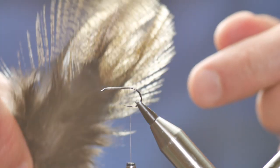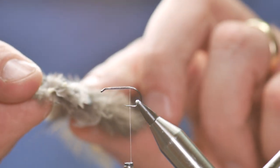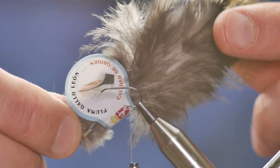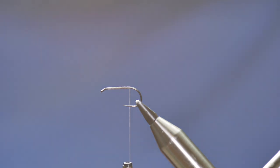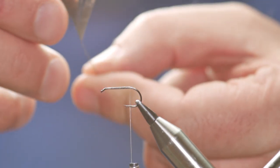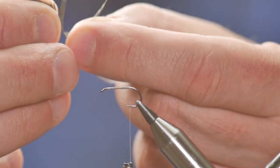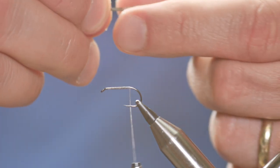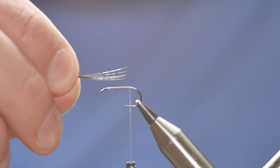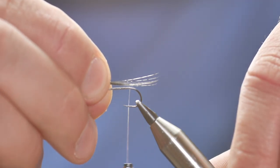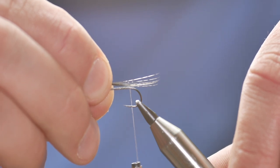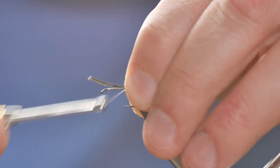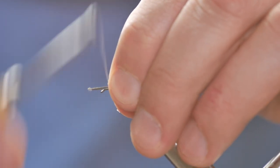The tailing for this I'm going to use some cock de leon. This one came from Troutline I believe, or it may have been Get Slaughtered. I'm going to take five or six barbs from the stem, and as you rip them away they should all marry up quite nicely. I want the tail to be fairly long on this fly. I'm going to catch that in.